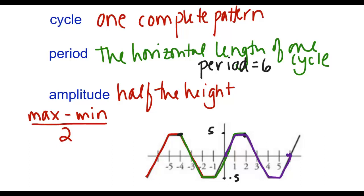So in this case, you can see I've drawn in that our max value was 5. Our min value was negative 5, so we have 5 minus negative 5, all over 2, which is 10 over 2, which is 5. So our amplitude is 5, half the height of the whole function. So those are some vocab words associated with periodic functions.